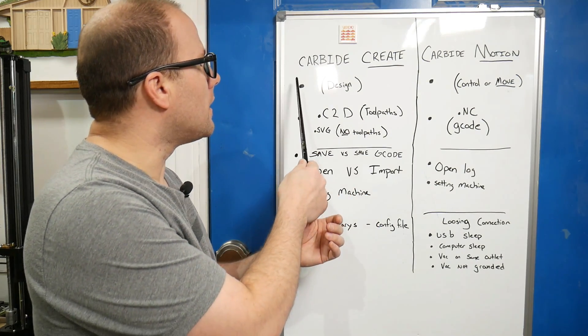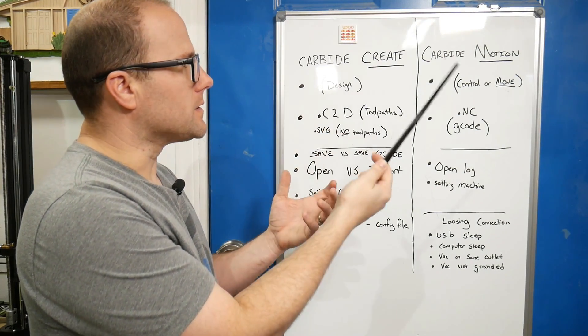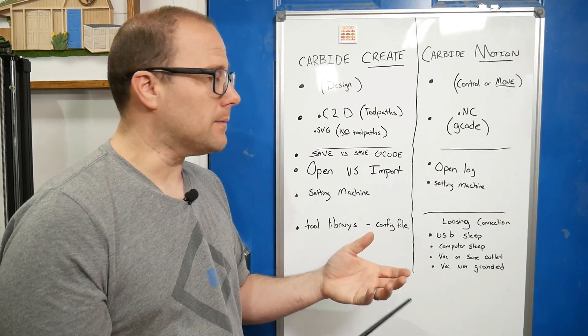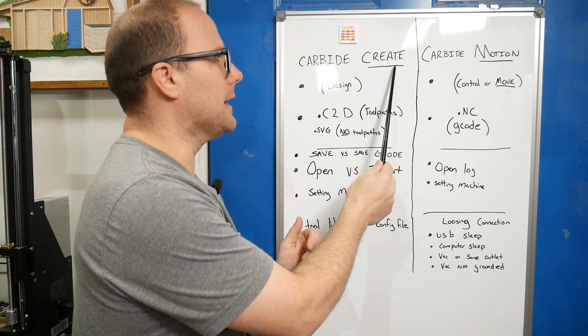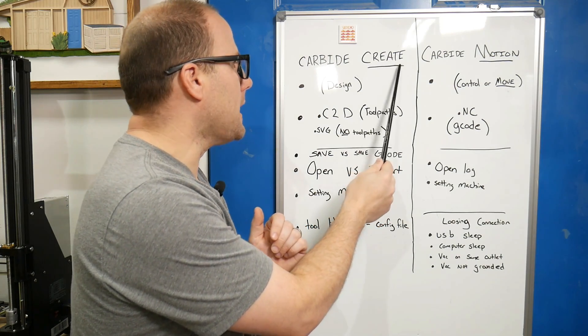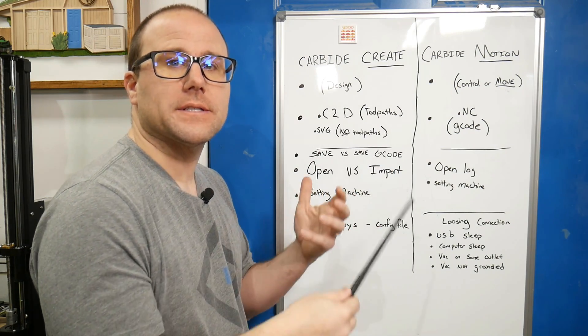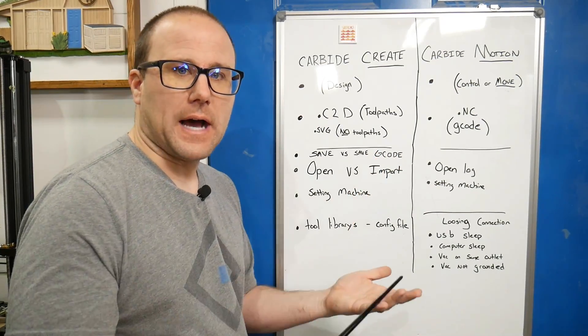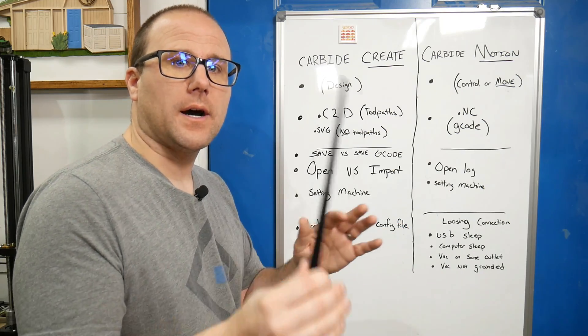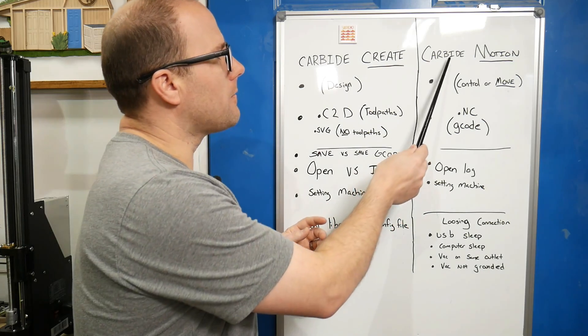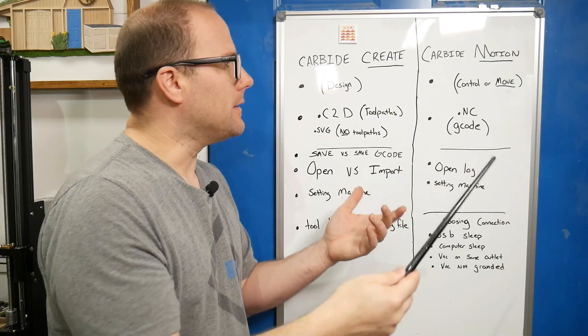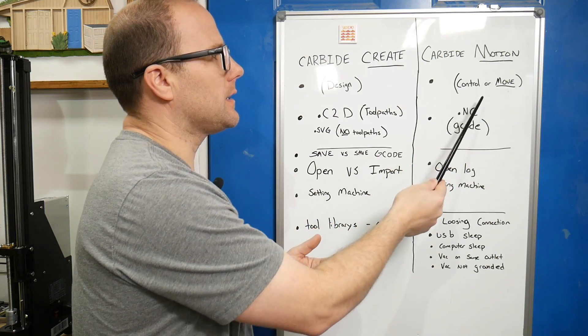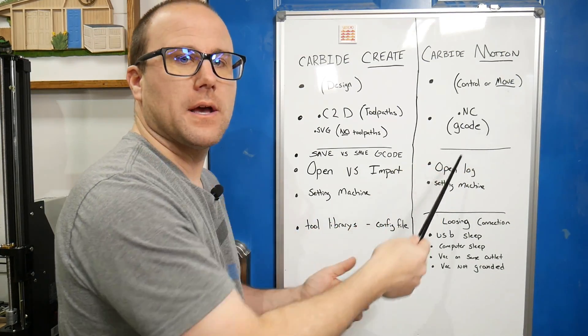For Shapeoko, we're using Carbide Create and Carbide Motion. They are two different programs. Carbide Create - think about the last name in that word, Create - that is our design software because we're designing something. That does not make the machine move or cut or anything. Carbide Motion controls or moves the CNC.